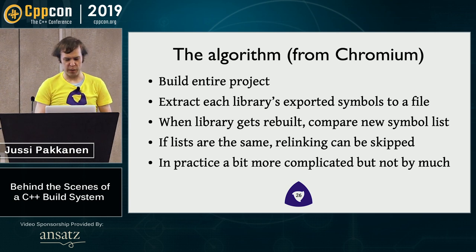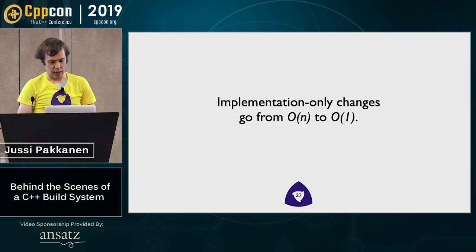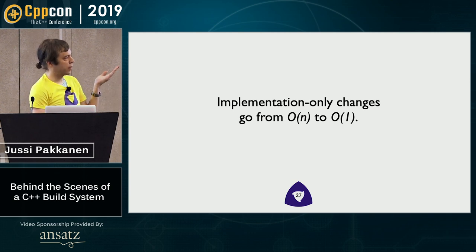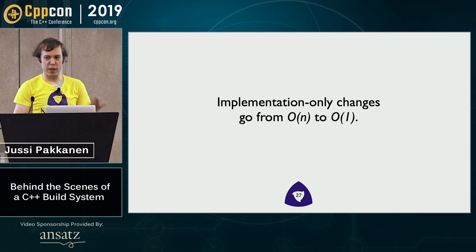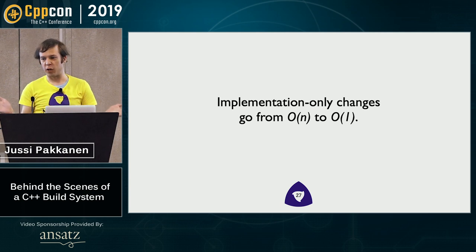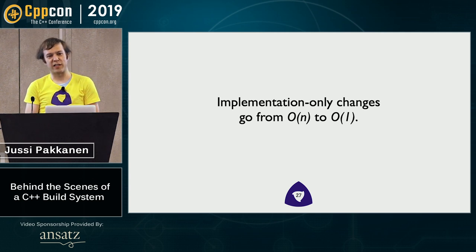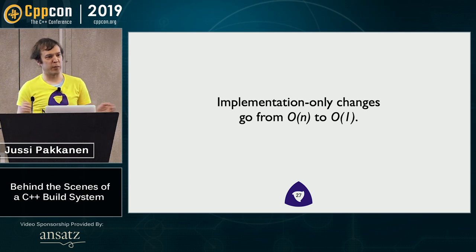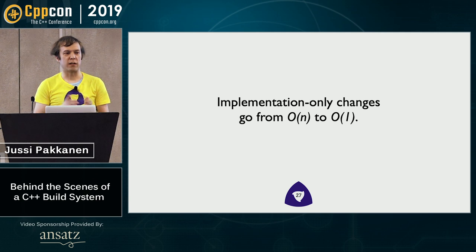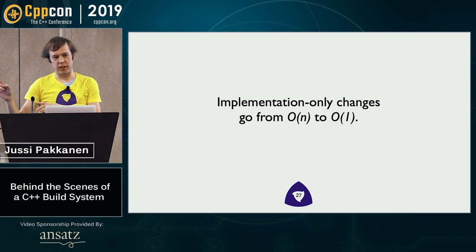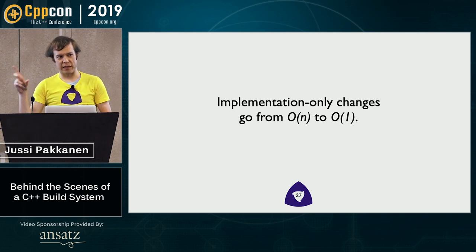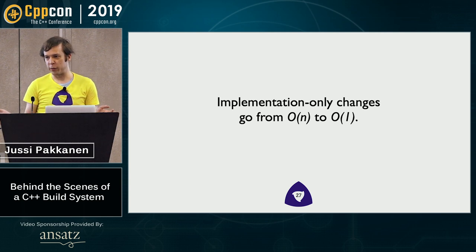The end result is that if you do implementation-only changes in your libraries, it's an O(1) operation — one compile, one link — as opposed to O(N) where you relink the world. Some people might say, 'We have build clusters, we have infinite compute power, we don't need this.' Well, this is not actually true, because a build cluster is a throughput optimization. This is a latency optimization. You can't optimize latency by adding more computers to it. So it's usable even in those kinds of contexts.